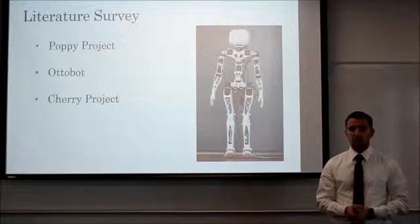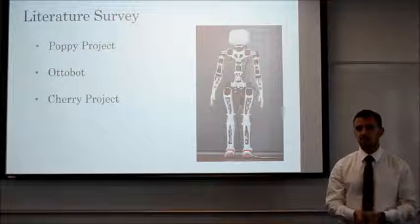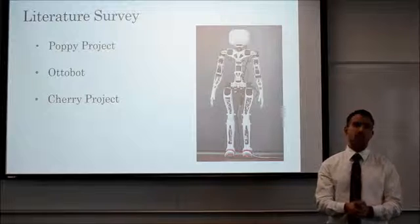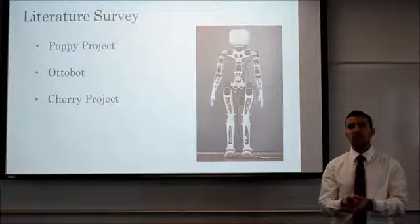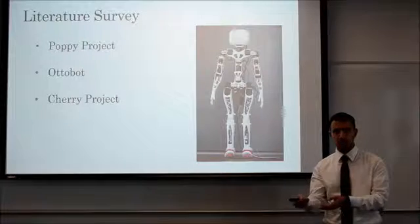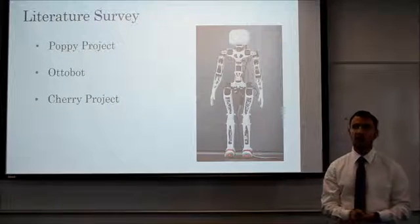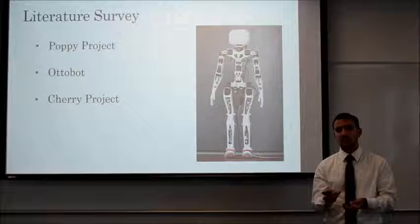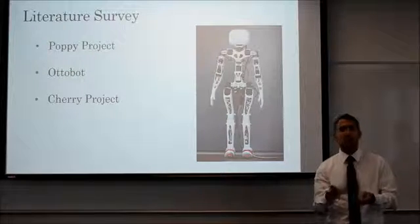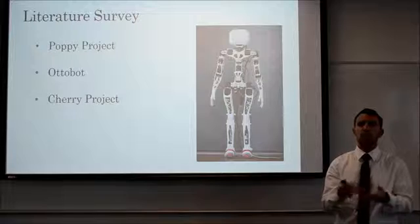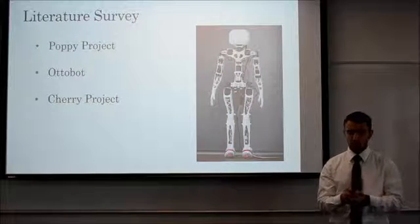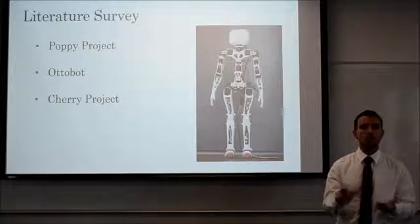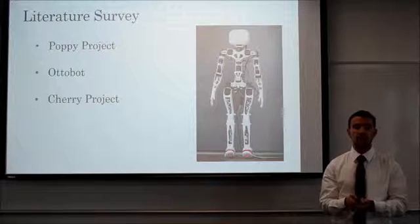There are a couple of existing open source projects serving as a basis for us: the Poppy Project, Autobot, and Cherry Project. Autobot and Cherry Project are two robot projects that place an emphasis on using robots to interact with children who may be socially isolated in hospitals. The Poppy Project is an anatomically correct, scalable model which we intend to use as a basis for movement design. In essence, we are trying to create a robot that takes the movement abilities of the Poppy but incorporates the social appeal and accessibility that the other projects include.